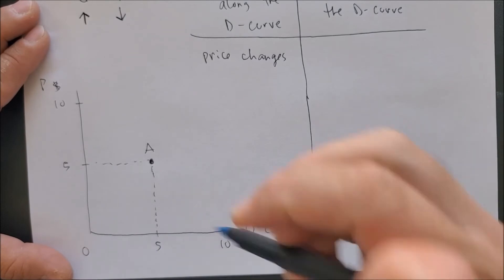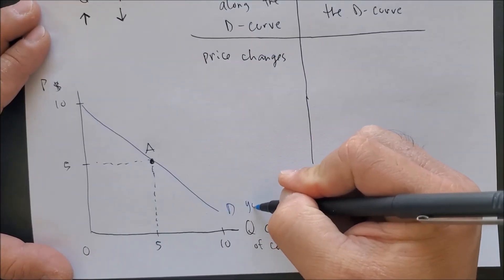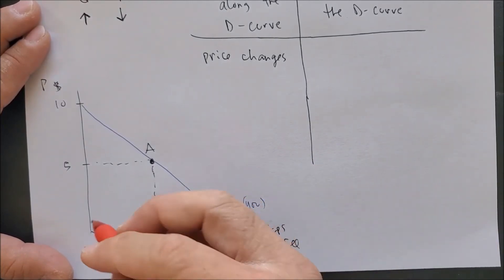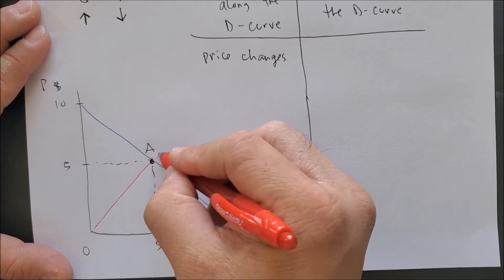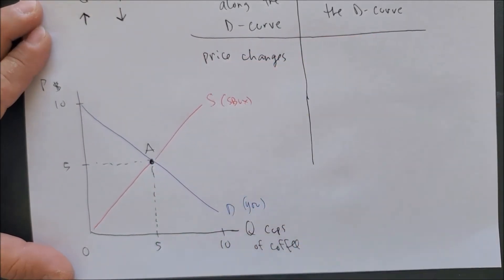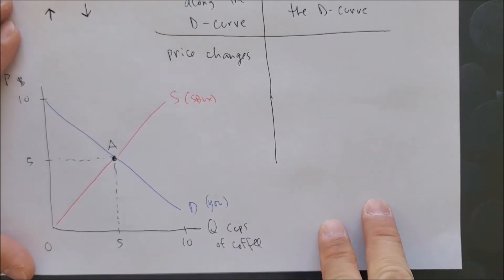Now we can put point A where five and five intersect and draw our demand curve. It is a downward sloping curve. That's where you are. And draw the upward sloping supply curve where producers, in this case Starbucks, is producing cups of coffee.